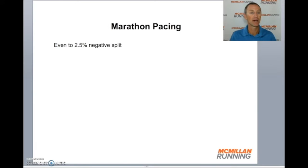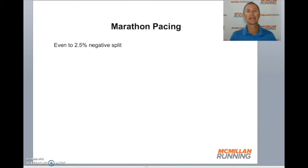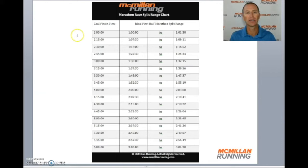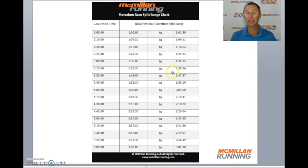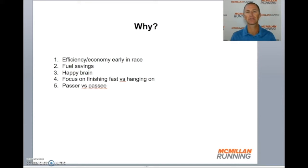For the marathon, even to a 2.5% negative split yields the fastest racing. So for the half marathon it's even to 1.5% slower in the first half; for the marathon it's even to 2.5% slower in the first half. Looking at common finish times — for example, a 3:30 marathon — an even split would be 1:45 at the halfway point, up to 1:47:37 for a 2.5% negative split. There's a lot of buffer, but we're not going faster in the first half.